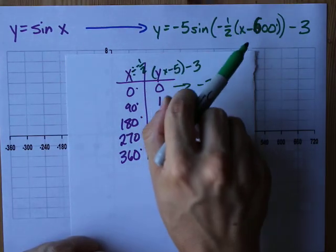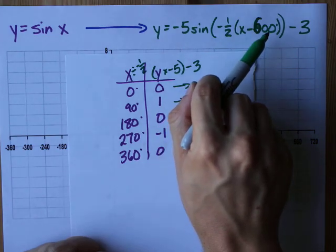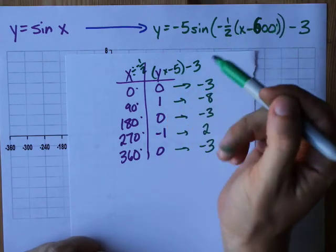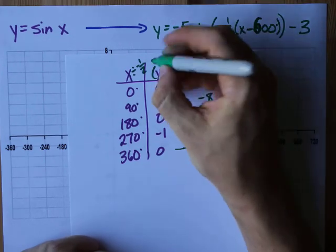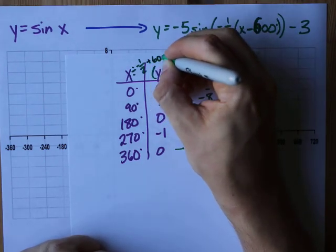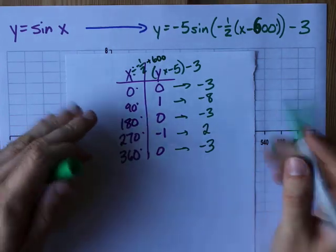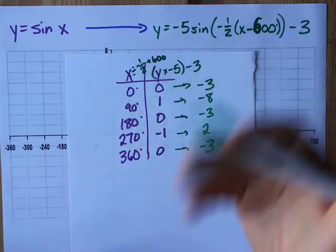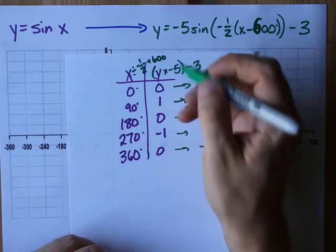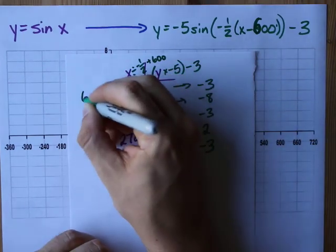And likewise, this minus 600 degrees for the phase shift or horizontal shift, you have to compensate for that by making it plus 600 in this formula. So, let's do this. Zero divided by negative a half is still zero. And when you add 600 to that, this gives you 600.